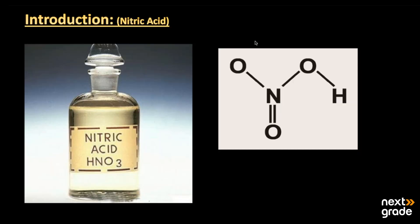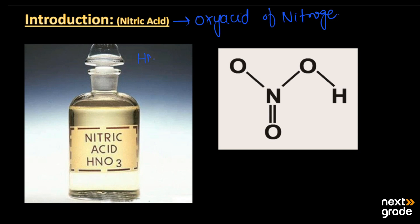Dear students, I hope all of you are fine and doing well. The topic we are going to discuss is nitric acid. Nitric acid is also known as the oxy acid of the element nitrogen. The simple formula of nitric acid is HNO3, in which nitrogen has three oxygen atoms and one hydrogen atom. Nitrogen is the central atom, having a double bond with one oxygen and single bonds with the other atoms.